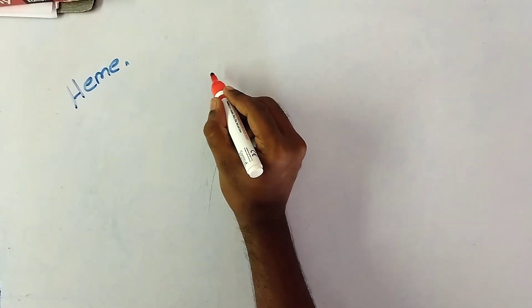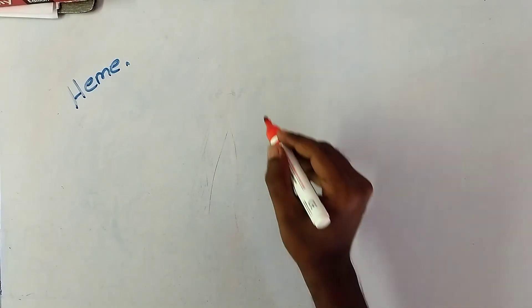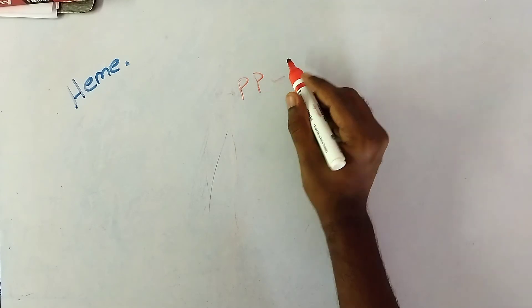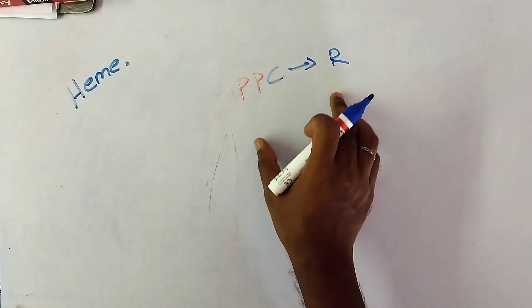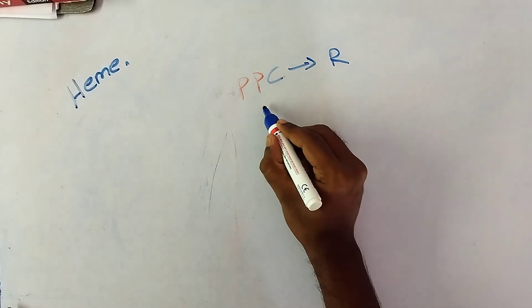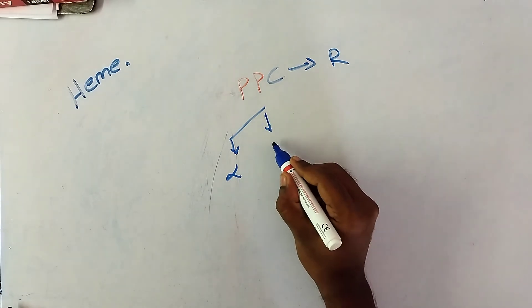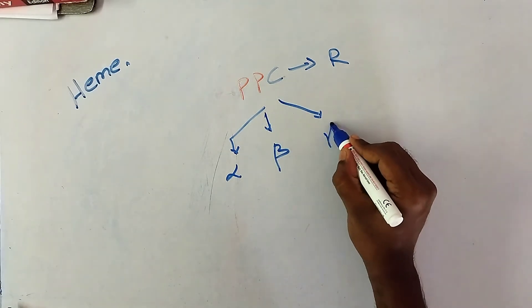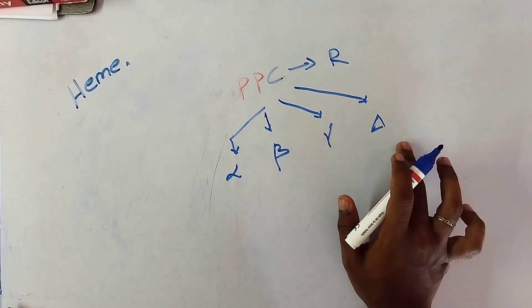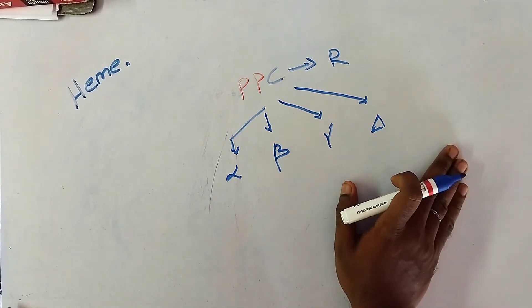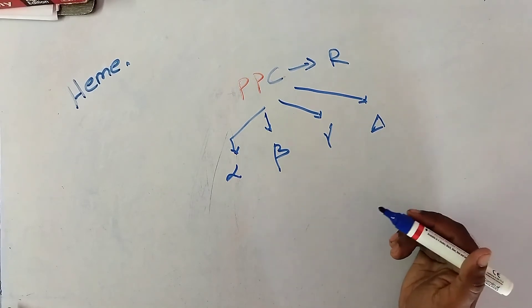Now we have to prepare the globin. The polypeptide chains of globin are produced in ribosomes and released from the ribosomes. There are four polypeptide chains: alpha, beta, gamma, and delta. These four chains differ from each other by their amino acid sequence.